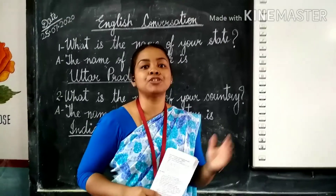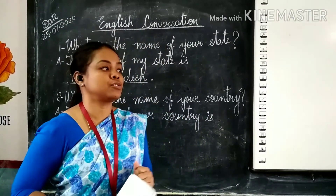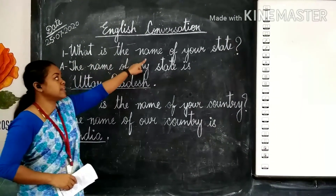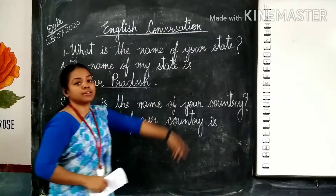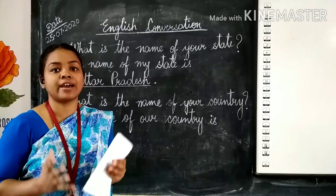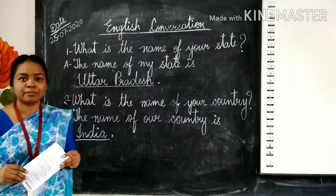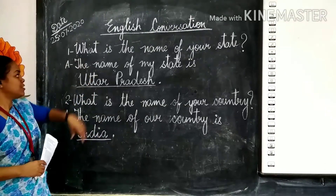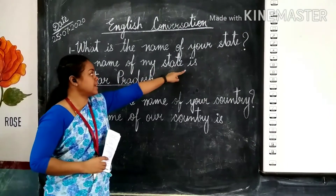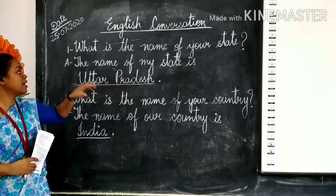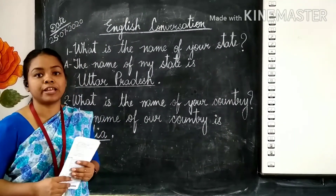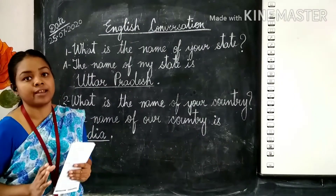So students, today we are going to learn two more new questions. Here we go. Question number one is: what is the name of your state? Means aapke rajya ka kya naam hai — do you know the name of your state? So your answer will be: the name of my state is Uttar Pradesh. Uttar Pradesh aapke rajya ka naam hai.